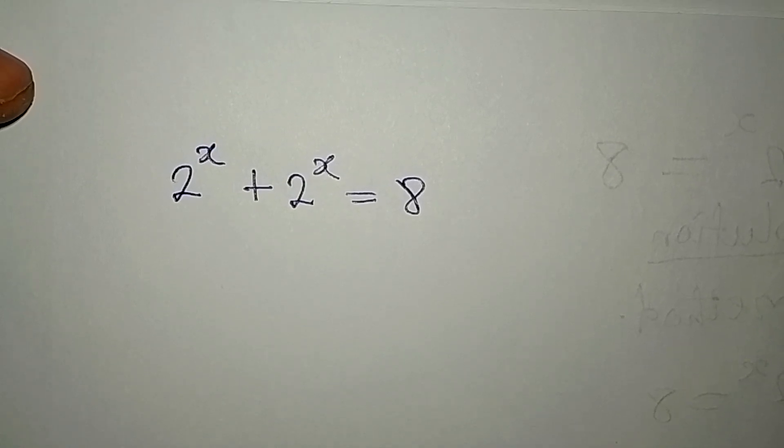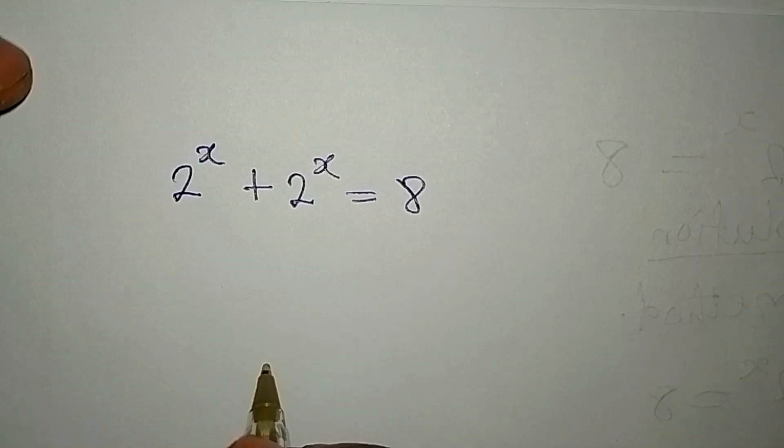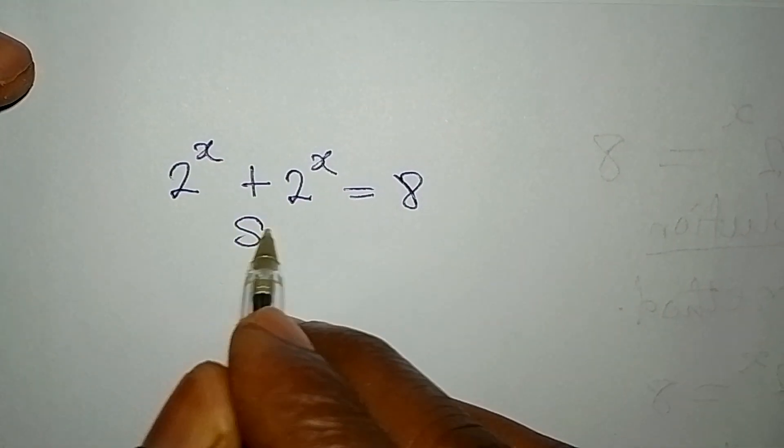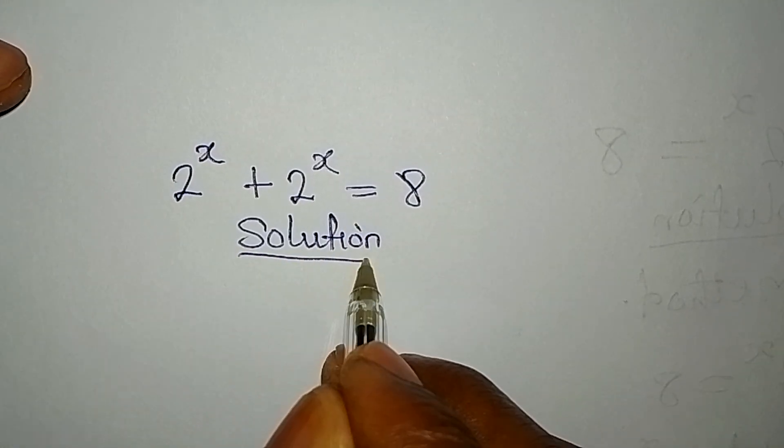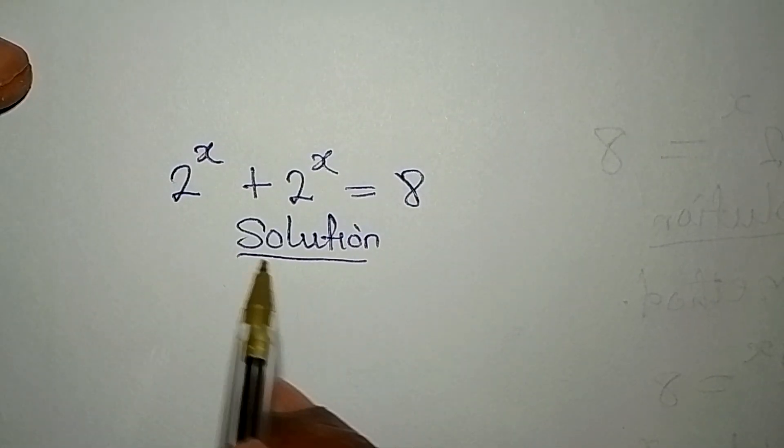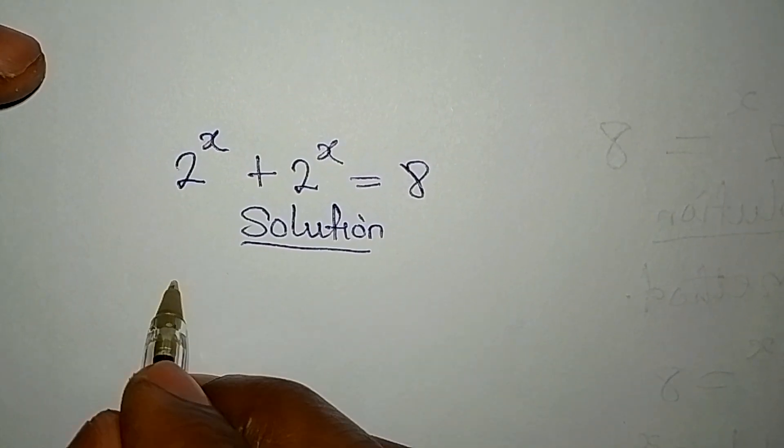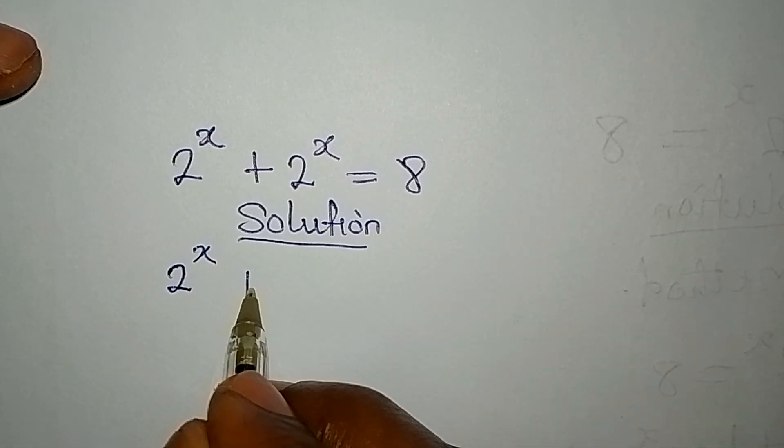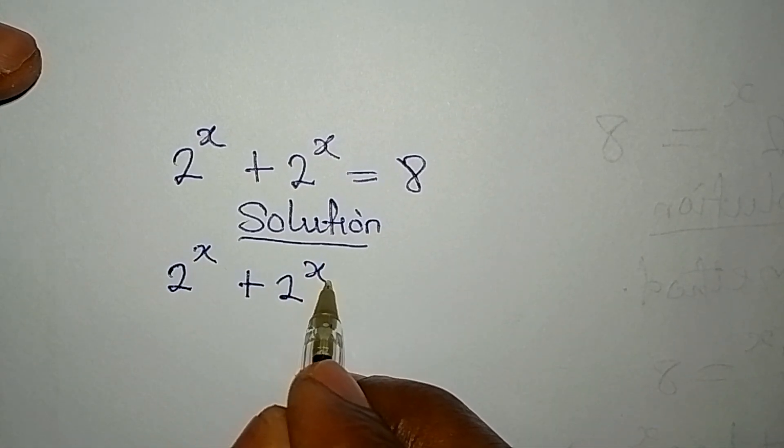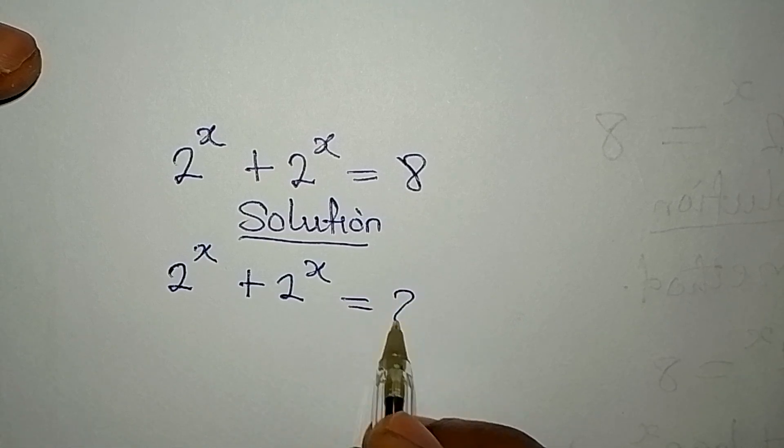Hello everyone, let's provide the solution to this problem. The first method involves the use of logarithm. So we have from the first method 2 to the power of x plus 2 to the power of x equals 8.